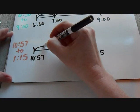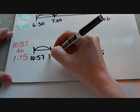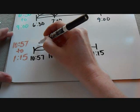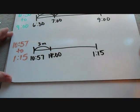So again, my first jump, I want to jump to the next full hour. So in this case, it would be 11 o'clock, and that time that passed is 3 minutes.